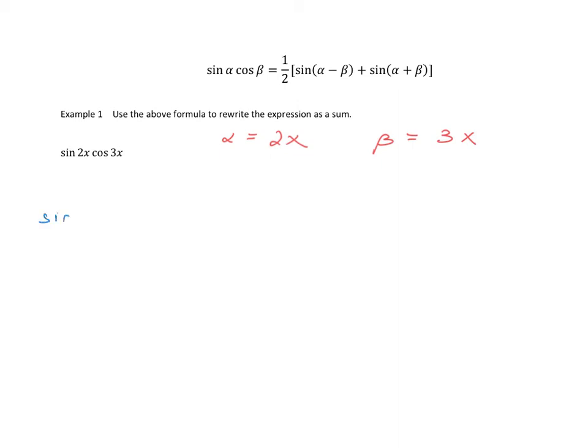So that is sine of 2x times cosine of 3x is really equal to one half of sine of—now alpha was 2x and beta was 3x—so that's 2x minus 3x plus sine of alpha was 2x. And we'll add on beta, which is 3x.